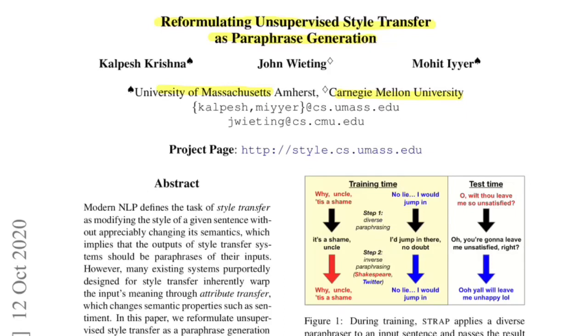If you analyze the title, there are three major keywords that we need to understand first before we go on with reading the paper. The first one is 'unsupervised', then 'style transfer', and the last one is 'paraphrase generation'. Let's talk about all three of these.